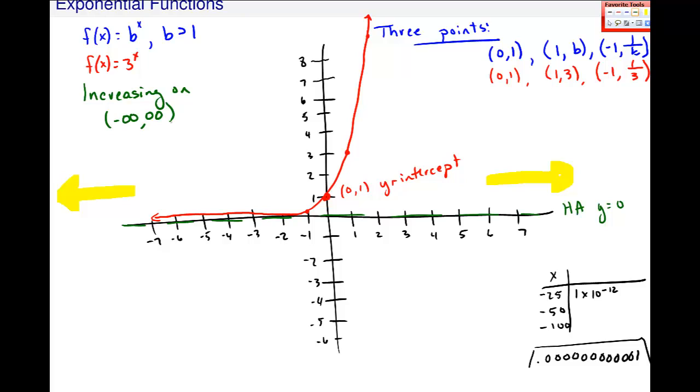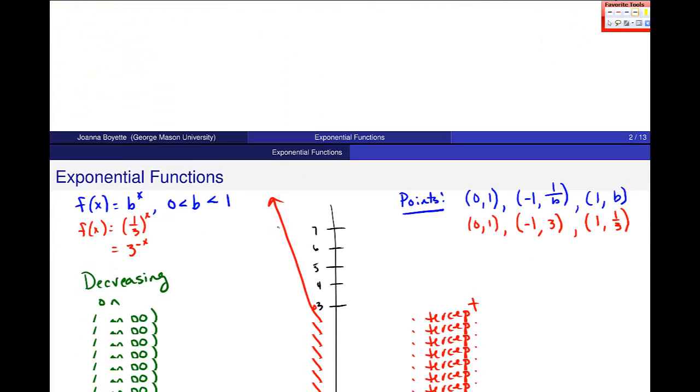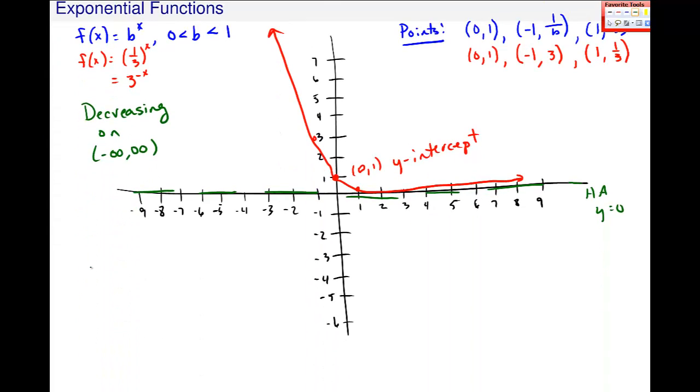And then, but this other one was increasing. Do you see this? This first one we did, increasing on minus infinity to infinity. And so this is what this graph, when b is greater than 1, my base is greater than 1, I get a growth called exponential growth. And when b is between 0 and 1, this is called exponential decay.